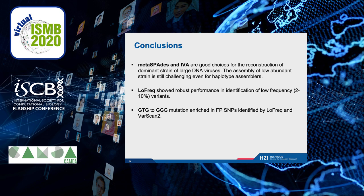To summarize, in this study we showed that MetaSpace and IVA are a good choice for the reconstruction of the dominant strain of large DNA virus. The assembly of low-abundant strains is still very challenging, even for the haplotype assemblers. LoFreq showed robust performance in identification of low-frequency variants. A GTG-to-GGG mutation was enriched in false positive SNPs identified by LoFreq and VarScan.